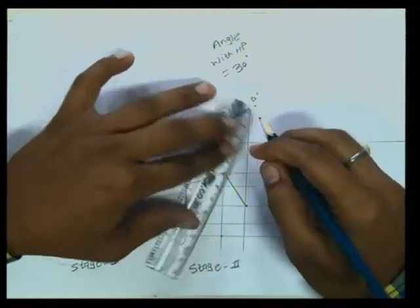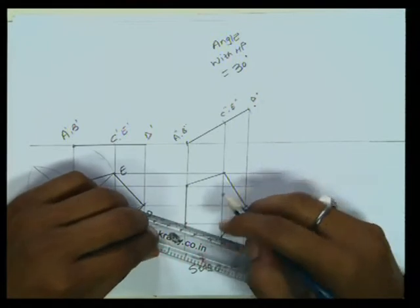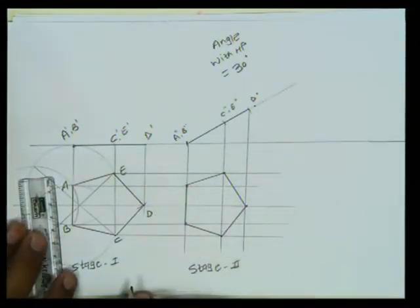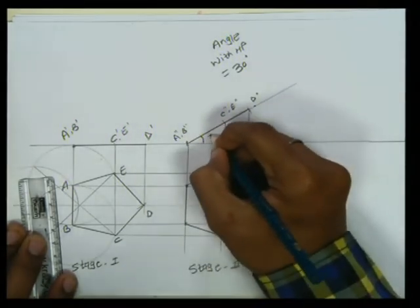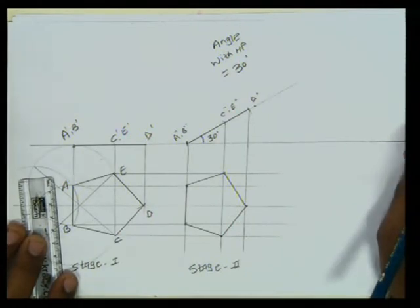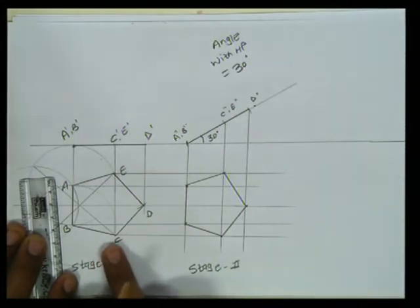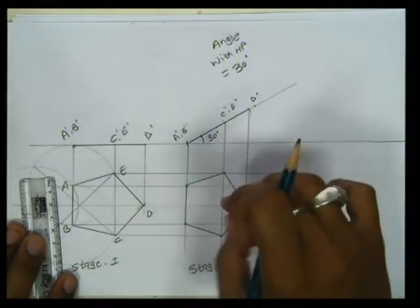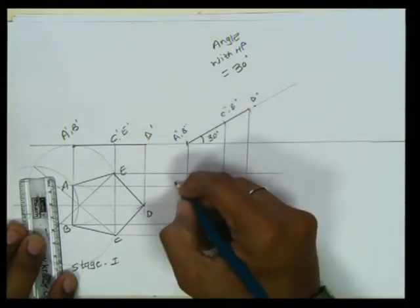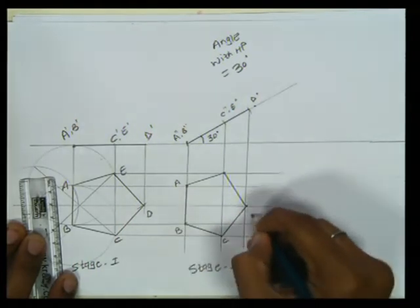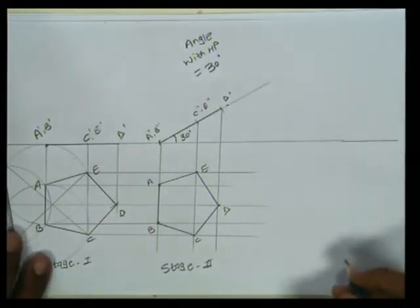This is Stage 2, in which we have incorporated the angle of the HP as well. You can see a clearly visible difference as we have implemented a 30-degree angle. The size between C and D is reduced; the rest of the sizes are the same because it is tilted at 30 degrees. The nomenclature would be the same: A, B, C, D, and E. Now we will proceed further.